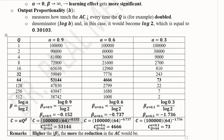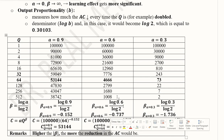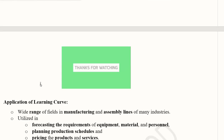Substituting these values into the learning curve formula C = α · Q^β at output Q = 64, we get: for a = 0.9, C = 53,144 (down from 100,000, approximately half). For a = 0.6, the cost declines quite substantially to about 4,666. For a = 0.3, it declines to just 73 units. As 'a' declines, the learning effect is more substantial and cost declines significantly. The higher the absolute value of beta, the greater the reduction in average cost — meaning a greater learning effect.